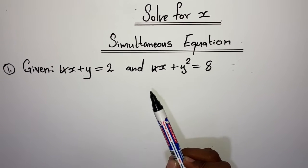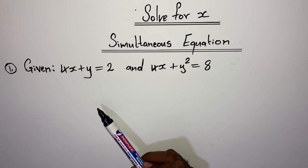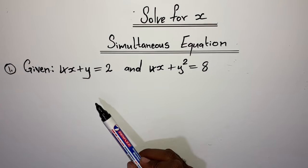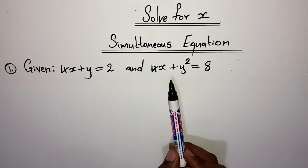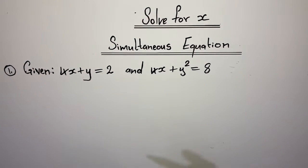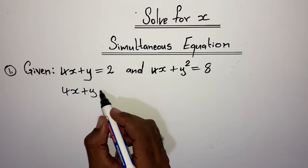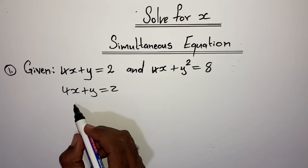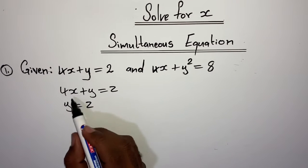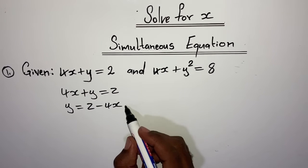Whenever you are dealing with simultaneous equations, you must look at both of your equations and see if there is a chance of making either x or y the subject of the formula without creating fractions. In this instance, the first equation — 4x plus y is equal to 2 — I can just take it down.